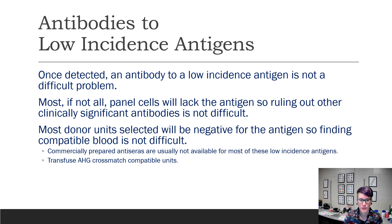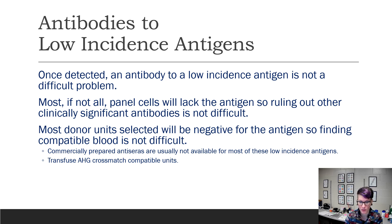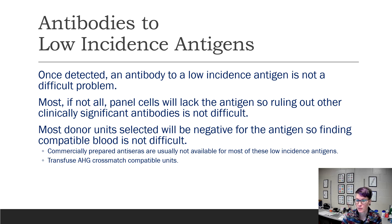On the other side of the spectrum are antibodies to low incidence antigens. Once we detect an antibody to a low incidence antigen, it's usually not a problem because most donor units are negative for these. And it's still easy to rule out any other significant antibodies because most panel cells are negative for these. Usually there's not commercially available antisera for these, so we just do an AHG crossmatch to find compatible units.